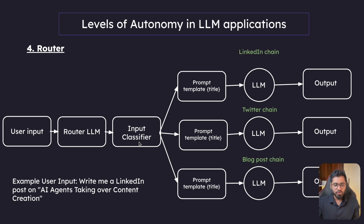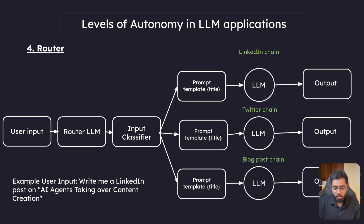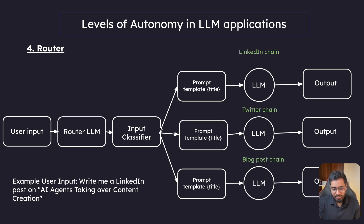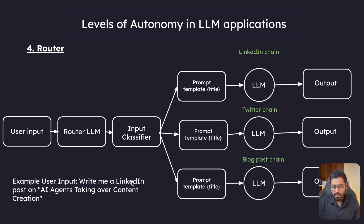The classifier takes in that keyword and, depending on whether it is LinkedIn, Twitter, a blog post, or something else, it directs the control flow to the appropriate chain — the first, second, or third chain. Since the user is asking for LinkedIn, it directs the control flow to the LinkedIn chain.